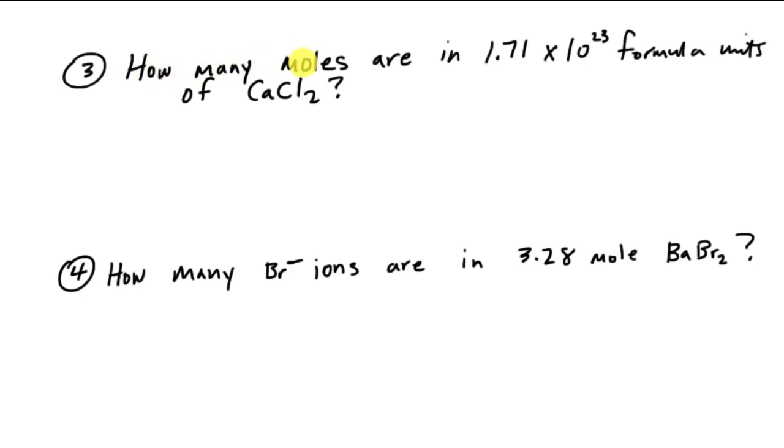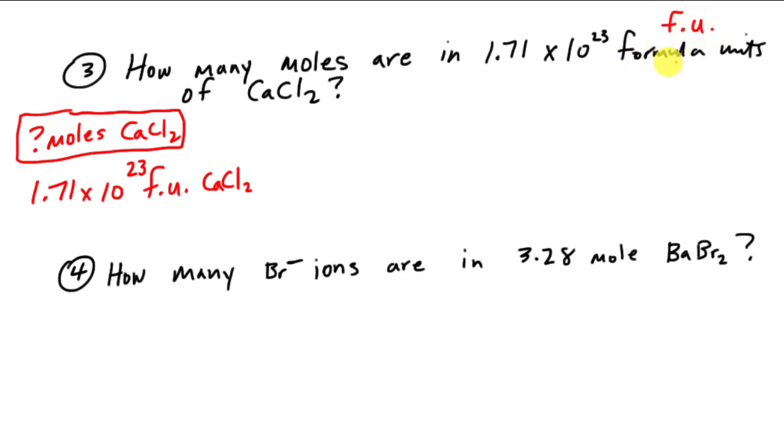In this problem here, number three, what I'm looking at is calculating the number of moles that are in 1.71 times 10 to the 23rd formula units of calcium chloride. So this time I'm looking for moles of calcium chloride. Start with looking for moles. And what I'm given is 1.71 times 10 to the 23rd formula units of calcium chloride. And yes, I did just abbreviate formula units with an FU. FU for formula units, just a lot. You don't want to write that out any more than you have to. So what I'm going to do is I'm going to put FU on the bottom, formula units, calcium chloride.